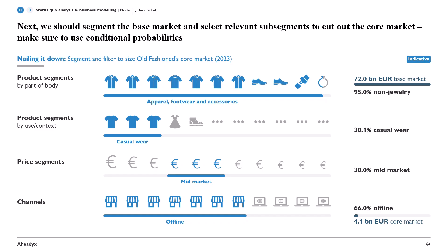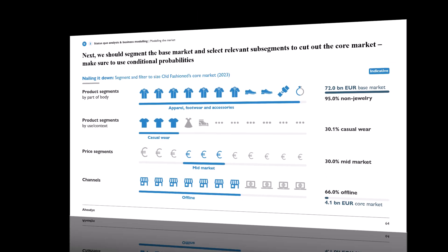A side note on why those conditional probabilities or shares are so relevant: when you look at the offline channel and the price segment, note that for the luxury price segment, the offline channel would be 76%, not just 66%. And thus, it's really important that we look at these conditionals.